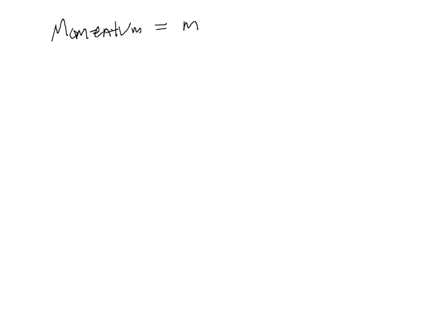Let's define momentum. Momentum of an object is mass times velocity. And because velocity is a vector, that means momentum is also a vector. So that's one difference that momentum has with energy: energy is a scalar, momentum is a vector.